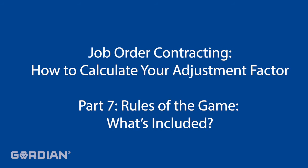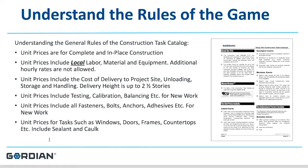Understanding the rules of the game is one of the critical aspects of successfully bidding on a job order contract. Be certain to read the very front section of the price book known as 'Understanding the Construction Task Catalog.' This section will explain that the unit prices are for the complete and in-place construction of the item. The unit prices include local labor, material, and equipment. Additional hour rates are not allowed in any proposal.